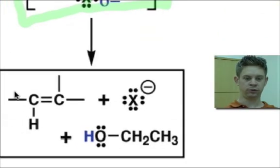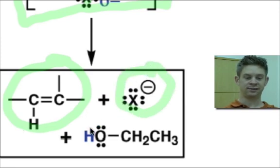The products that result are an alkene, the leaving group X minus, and the conjugate acid of the base that was used, in this case, ethanol.